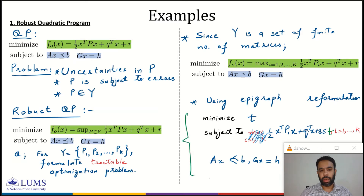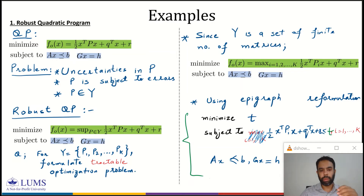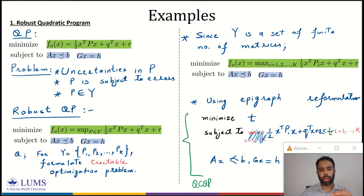If you look at this problem, we are minimizing a linear function subject to quadratic inequality constraints, affine inequality constraints, and affine equality constraints. Therefore, a robust quadratic program can be formulated as a quadratically constrained quadratic program (QCQP).